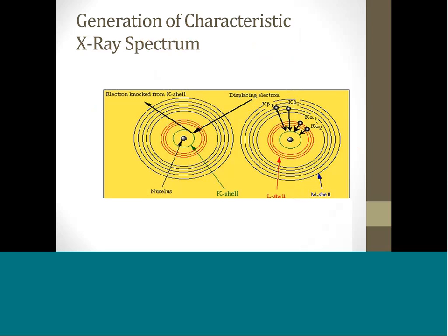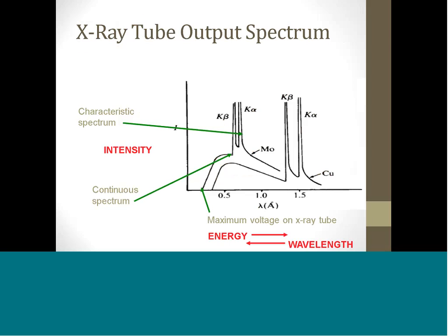The characteristic X-ray spectrum occurs when the incident electron knocks an atomic electron out of its normal orbit. When a higher-level orbital electron fills the vacancy in that orbit, an X-ray is emitted. Since the first electron orbit is called a K-shell, a vacancy in that shell results in an X-ray called a K-X-ray. X-rays originating in the second electron shell are called L-X-rays. Characteristic X-rays are used for investigating crystal structure by X-ray diffraction. A graph of an actual X-ray tube's output shows the characteristic X-ray spectrum superimposed on the continuous X-ray spectrum and displays two characteristic peaks. The K-alpha peak is caused by L-shell electrons filling the K-shell vacancy. The K-beta peak is caused by M-shell electrons filling the K-shell vacancy. The K-beta X-ray is always more energetic than the K-alpha X-ray.